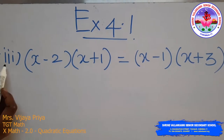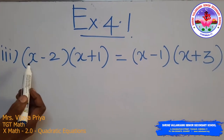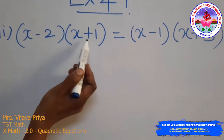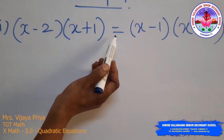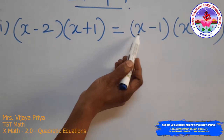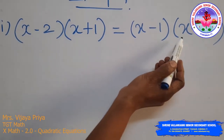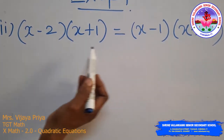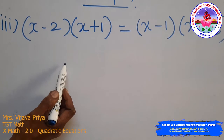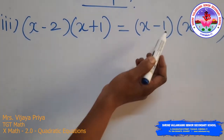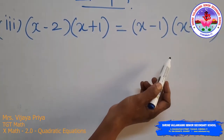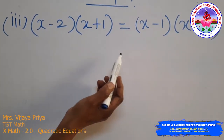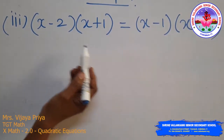Third subdivision: (x − 2)(x + 1) = (x − 1)(x + 3). We will simplify both the left hand side and right hand side to determine whether it is a quadratic equation.